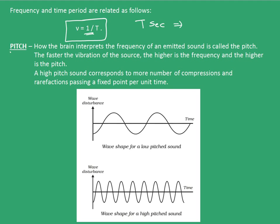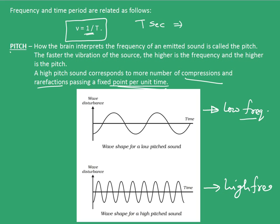Now we will see some terms used in context with the sound wave. The first term is pitch of the wave. Pitch is how the brain interprets the frequency of an emitted sound. The faster the vibration of the source, the higher is the frequency and the higher is the pitch. A high-pitched sound corresponds to more number of compressions and rarefactions passing a fixed point per unit time. The first figure corresponds to a low-frequency, low-pitched sound. The second wave corresponds to a high-frequency, high-pitched sound, because more compression and rarefaction regions pass through a fixed point in the second wave compared to the first.